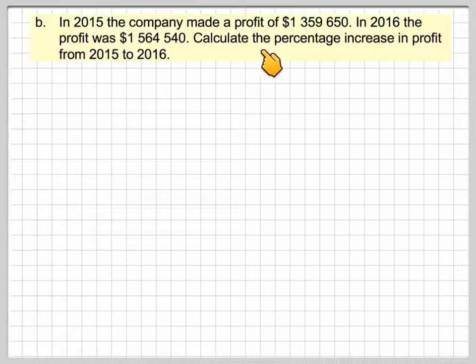In 2015, the company made a profit of $1,359,650. In 2016, the next year, the profit was $1,564,540. Calculate the percentage increase in profit from 2015 to 2016.